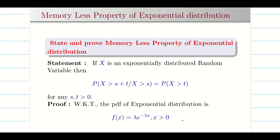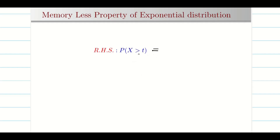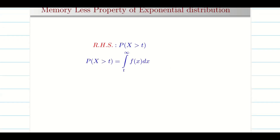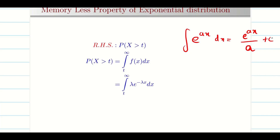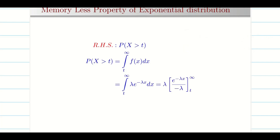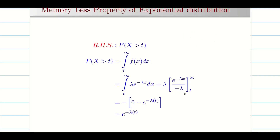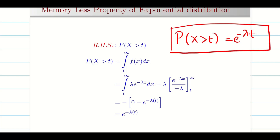Since it is exponential distribution, we take f(x) = lambda * e^(minus lambda x), for x greater than or equal to 0. Now let us take the RHS: probability of x greater than t. The lower limit is t going up to infinity of f(x) dx. My f(x) dx is lambda * e^(minus lambda x) dx, and we know the integration of e^(ax) is e^(ax) divided by a. Taking lambda outside, the integration of e^(minus lambda x) is e^(minus lambda x) divided by minus lambda. When we substitute the upper limit, e^(minus infinity) is 0 and e^0 is 1. The lambda terms cancel, and finally we get e^(minus lambda t). Therefore, probability of x greater than t equals e^(minus lambda t). This is what we have proved for the RHS.